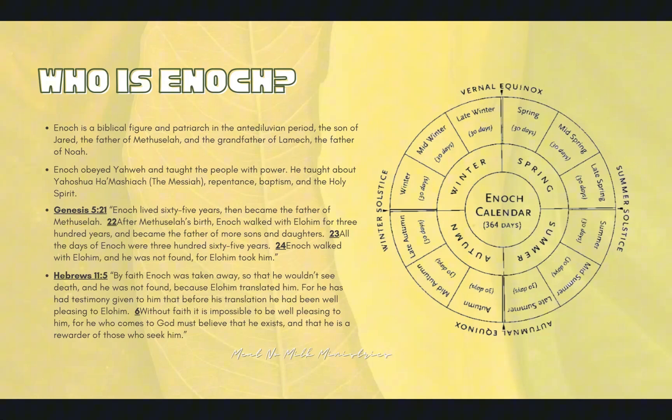Starting with Genesis chapter 5, verse 21: Enoch lived 65 years, then became the father of Methuselah. After Methuselah's birth, Enoch walked with Elohim for 300 years and became the father of more sons and daughters. All the days of Enoch were 365 years. Enoch walked with Elohim and he was not found, for Elohim took him. Anyone familiar with Enoch knows he did not die a natural death — he was translated or taken up to Yah. This is stated in Hebrews chapter 11, verse 5: 'By faith, Enoch was taken away so that he wouldn't see death, and he was not found because Elohim translated him. For he had testimony given to him that before his translation, he had been well-pleasing to Elohim.'